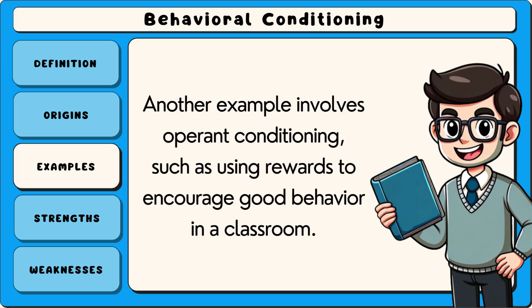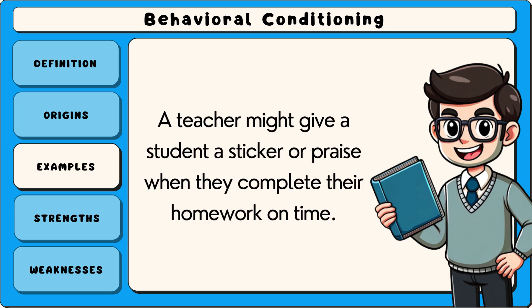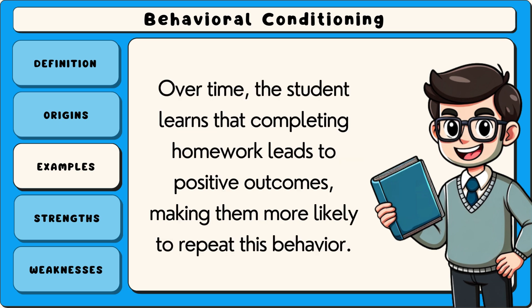Another example involves operant conditioning, such as using rewards to encourage good behaviour in a classroom. A teacher might give a student a sticker or praise when they complete their homework on time. Over time, the student learns that completing homework leads to positive outcomes, making them more likely to repeat this behaviour.